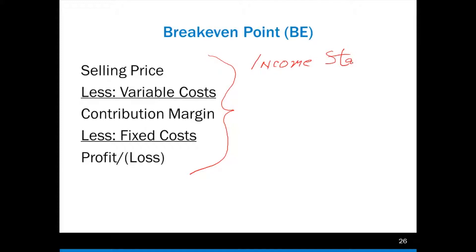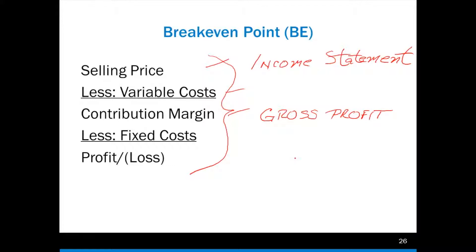All of this is what you find on an income statement — one of your financial statements. On an income statement, you have revenues, less your costs, and you get a contribution margin, also called gross profit. Those are two different terms that mean the exact same thing. So depending on how the data is given to you, it might say gross profit — and if you don't know that gross profit is the same as contribution margin, which is selling price less variable costs, you'll be stuck.